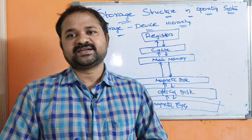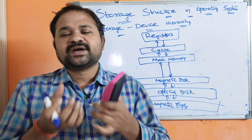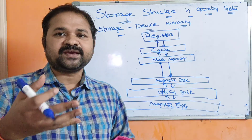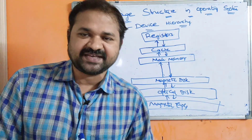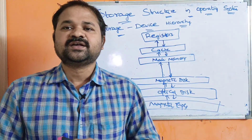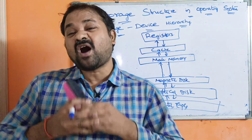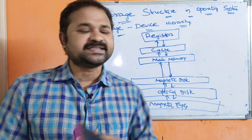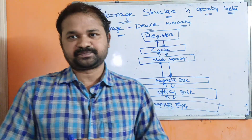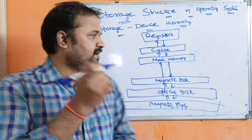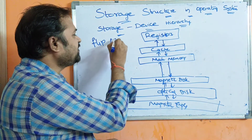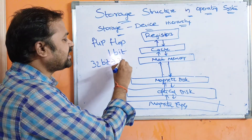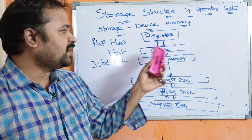The first one is registers. Registers are mainly useful in order to store a small piece of information. Registers can store the information in the form of bits, so the size of a register may be 8 bits, 16 bits, 32 bits, or 64 bits. The major advantage of registers is that the CPU can access the data of registers in a faster manner, because registers reside very near to the CPU. A register is a collection of flip-flops, and every flip-flop can store 1 bit of data. So if it is a 32-bit register, then it should be a collection of 32 flip-flops.